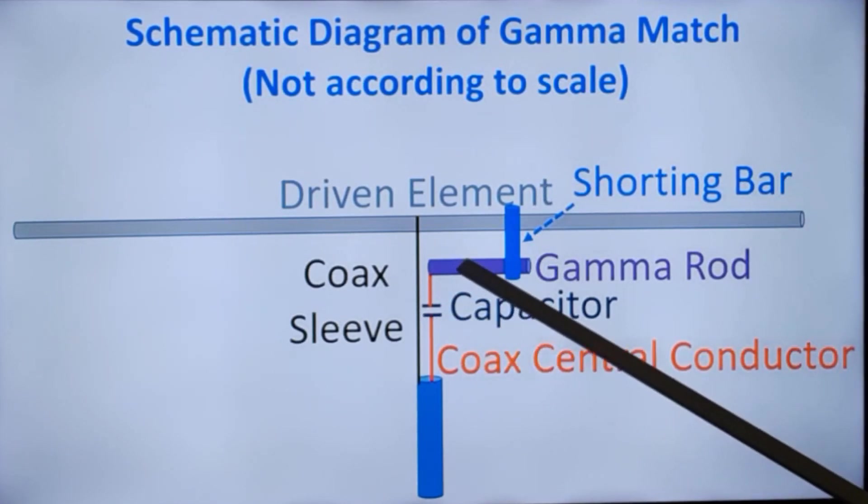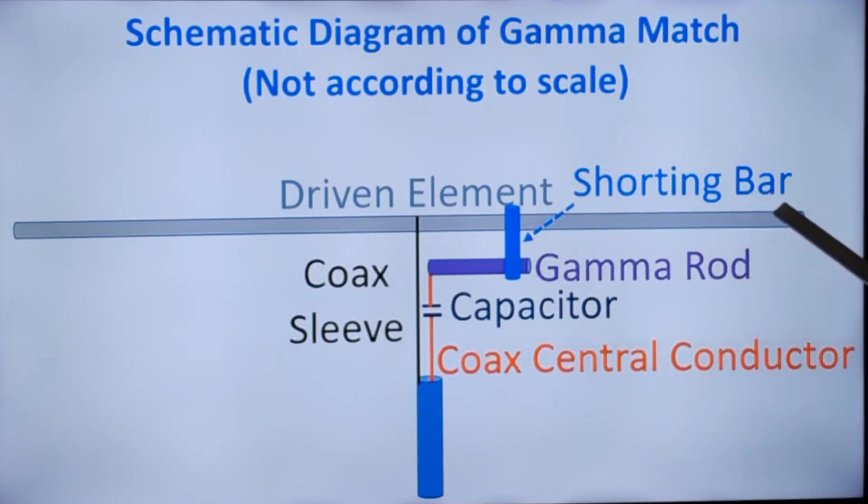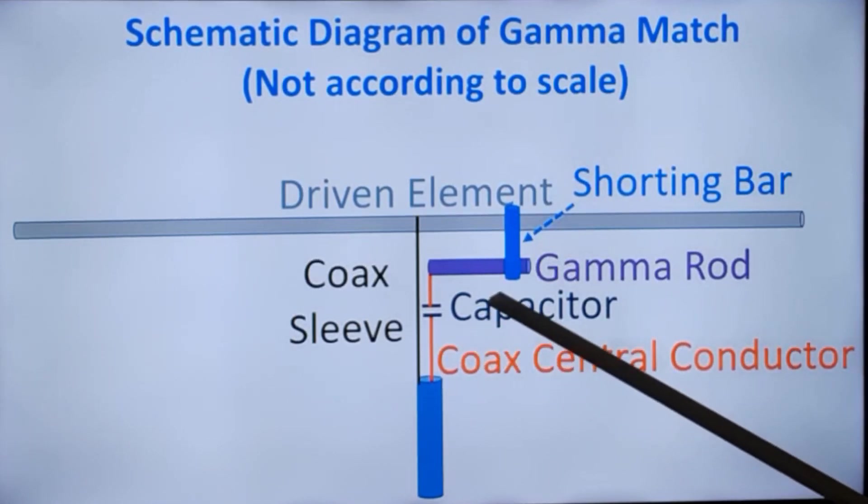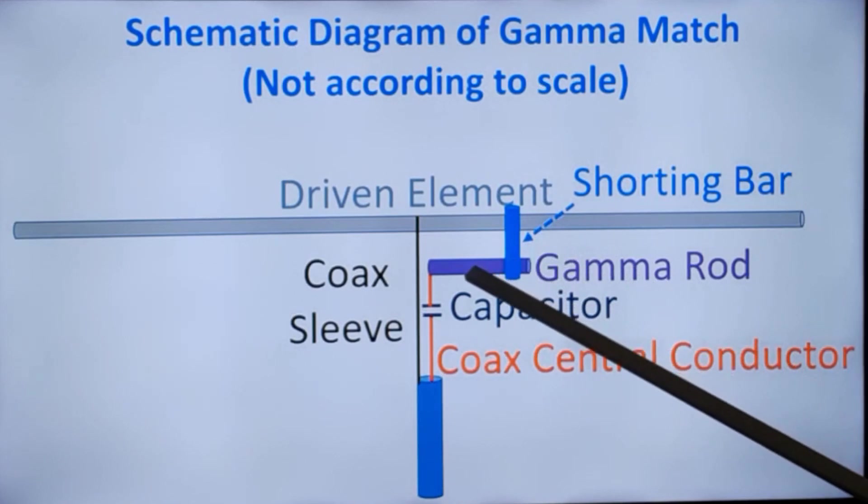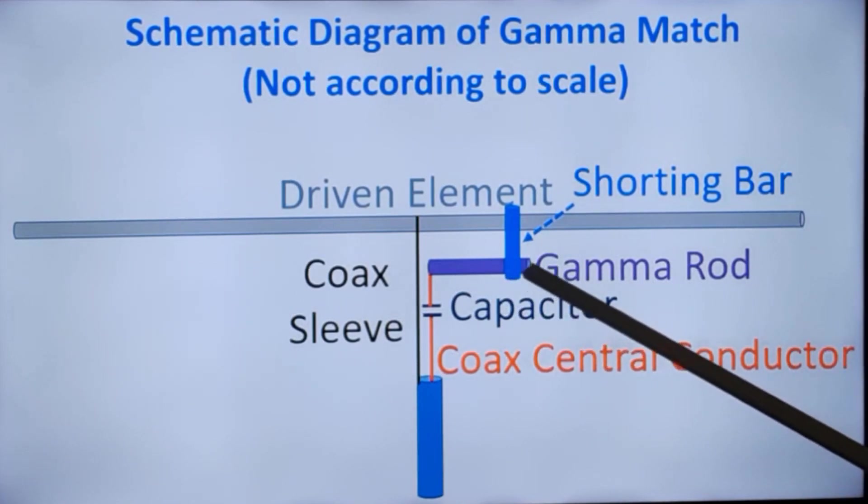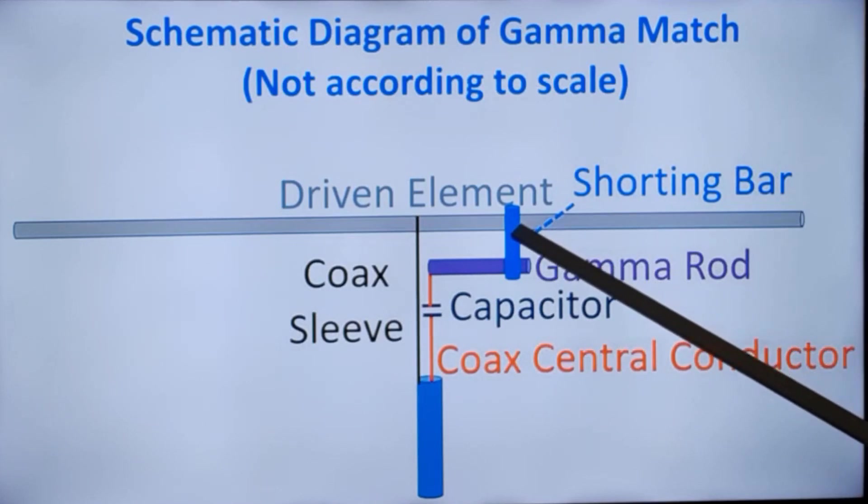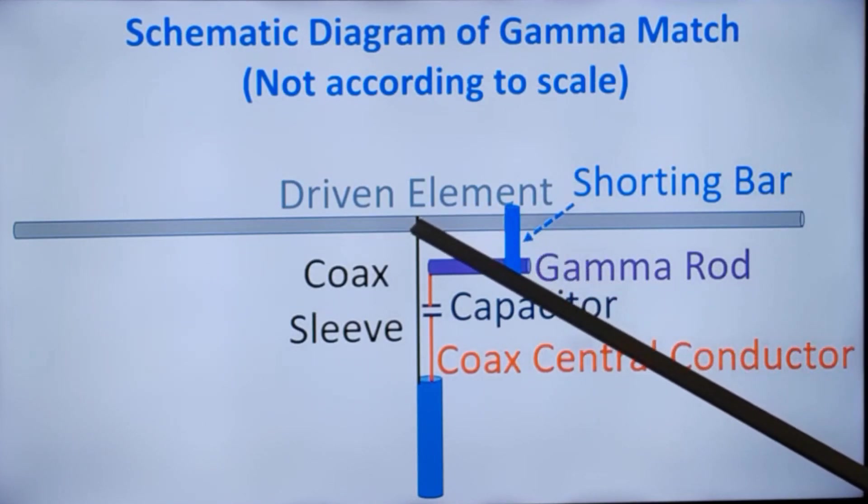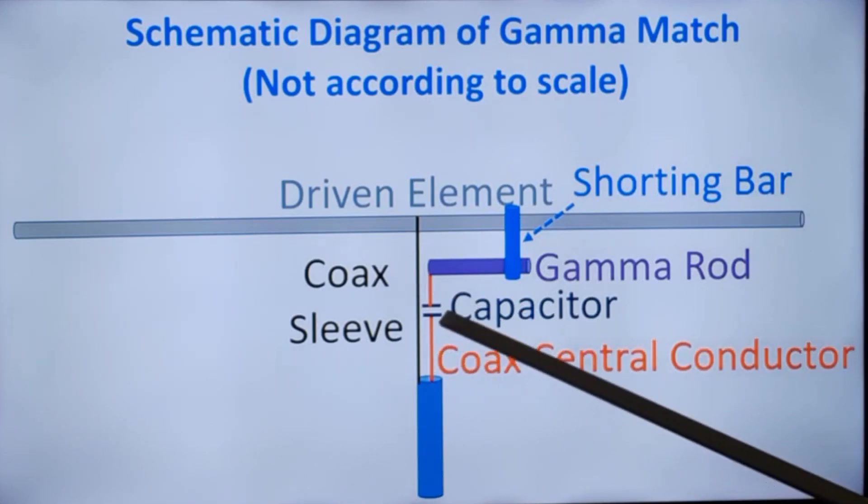This region is known as a gamma rod. Typically it has to have half the diameter of the driven element. Then you have a shorting bar which connects the gamma rod to the driven element. Here it is connected electrically, but there is no connection from the central portion of the coax. You have to have a capacitor here.